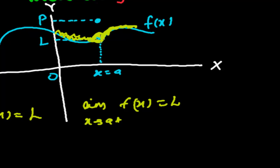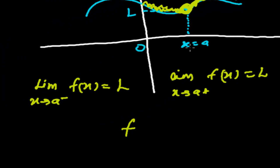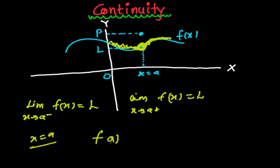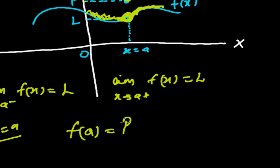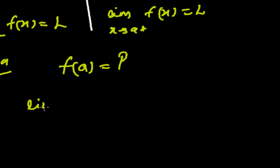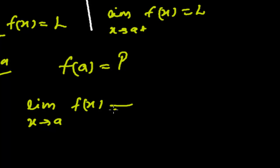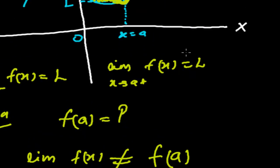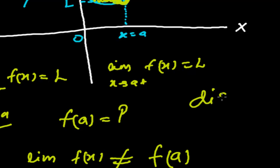So we get the left hand limit and the right hand limit. Now let's find the value of the function at this point. When x equals to a, f(a) equals p. So left hand limit is L, right hand limit is L — the limit exists. But the function has a different value at that point. So the limit when x tends to a exists, but limit is not equal to f(a).